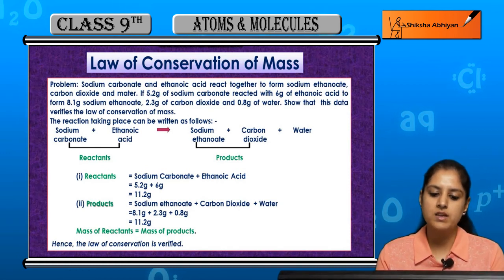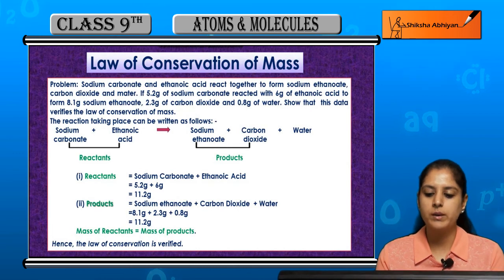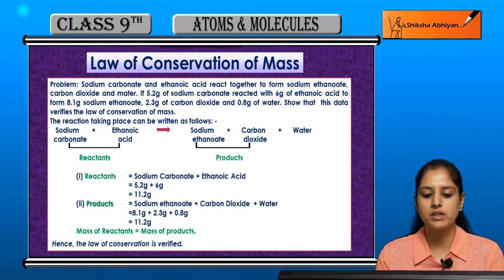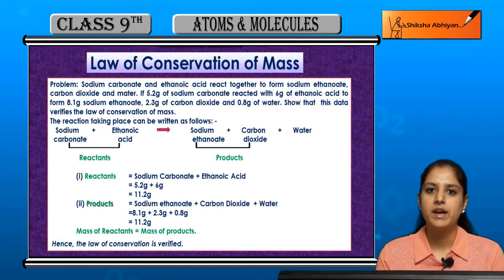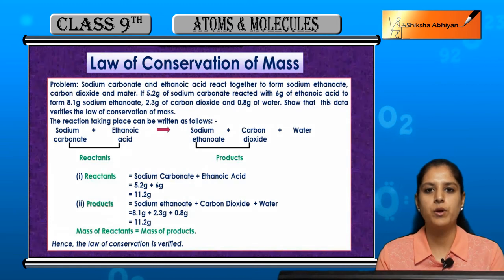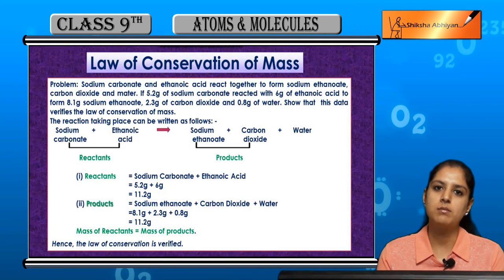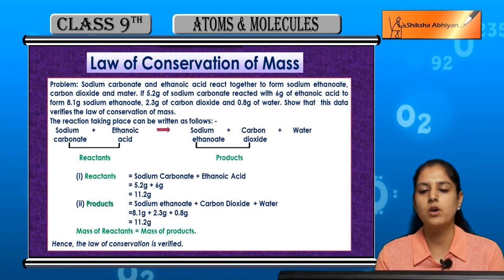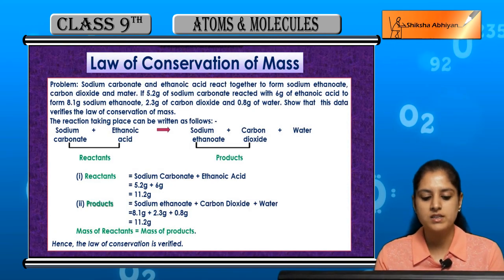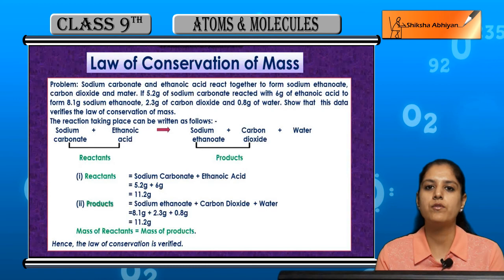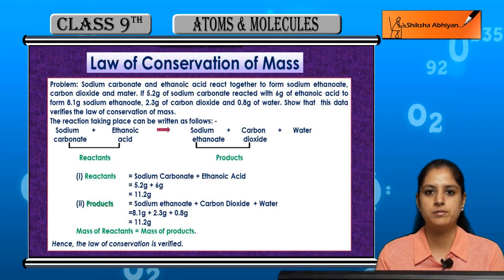Now products ka mass: sodium ethanoate plus carbon dioxide plus water kitna ho gaya? 8.1 grams plus 2.3 grams plus 0.8 grams, which is equal to 11.2 grams. So you can easily see ki reactants ka mass is equal to the mass of products. Hence, the law of conservation of mass is verified.